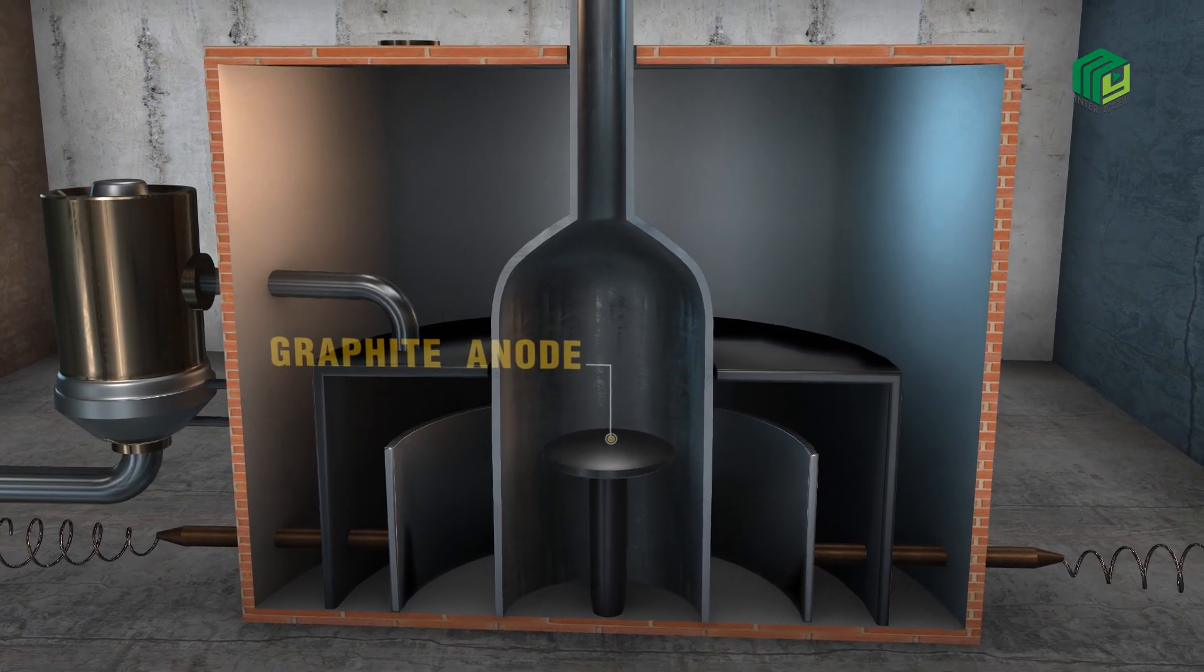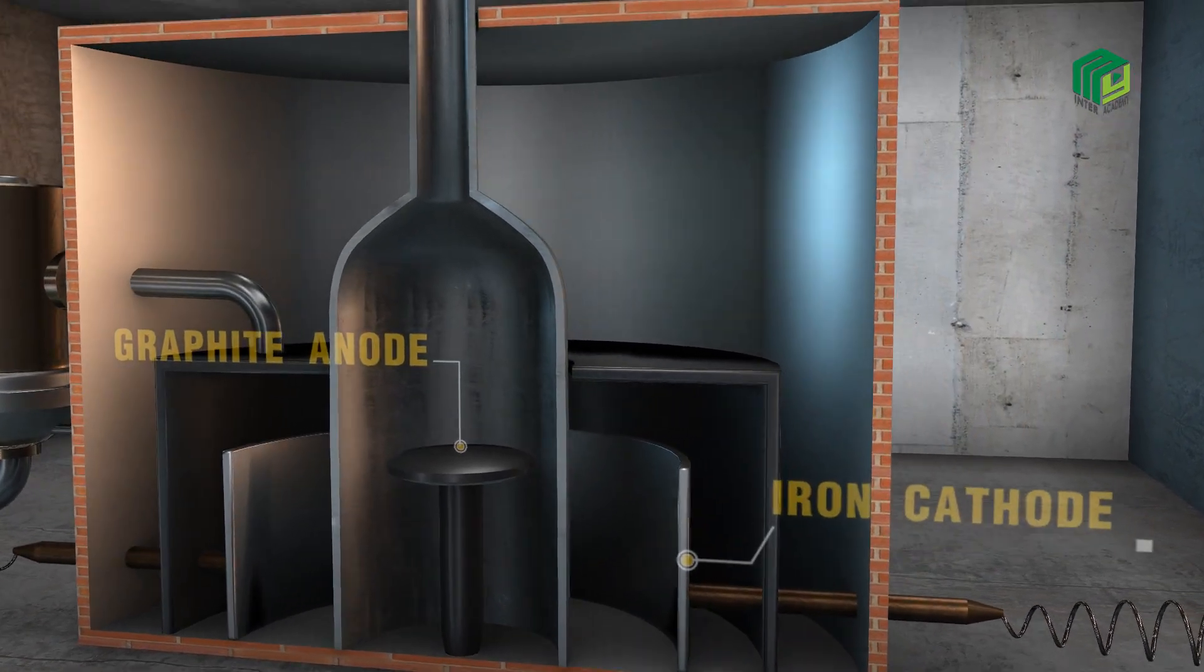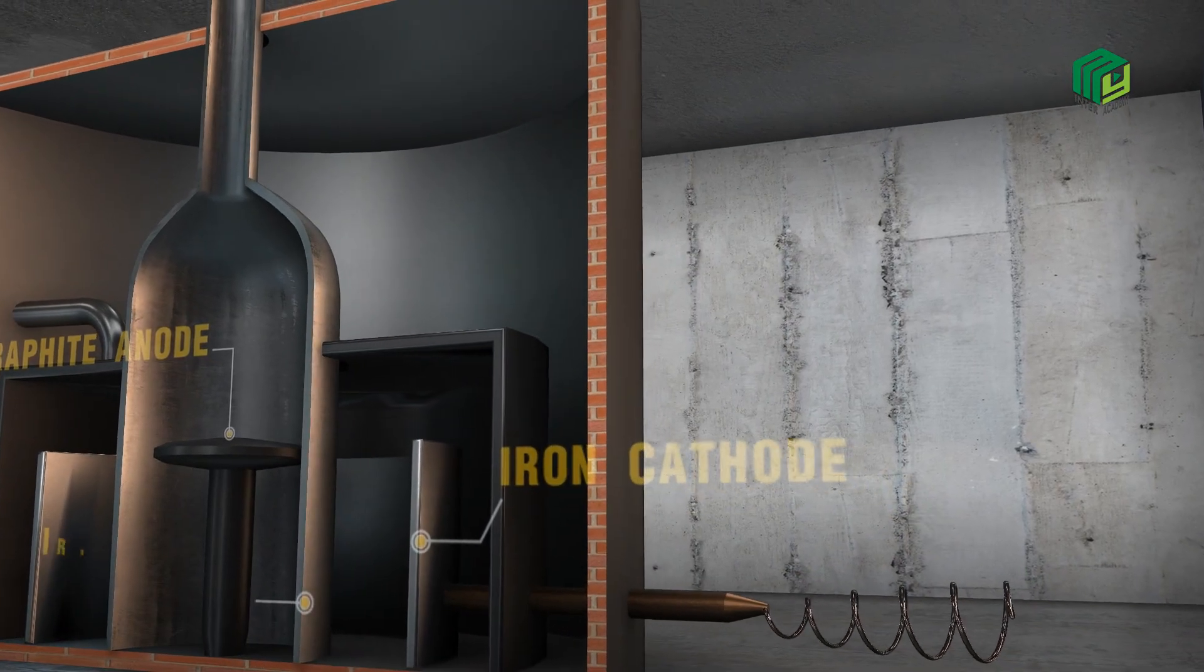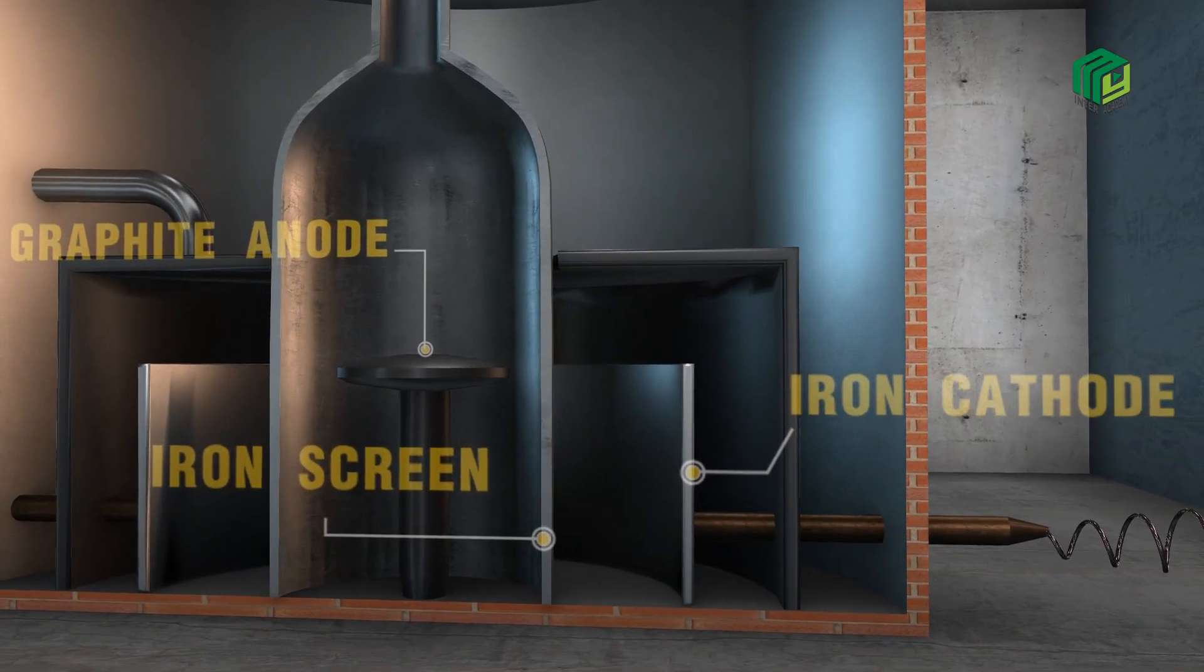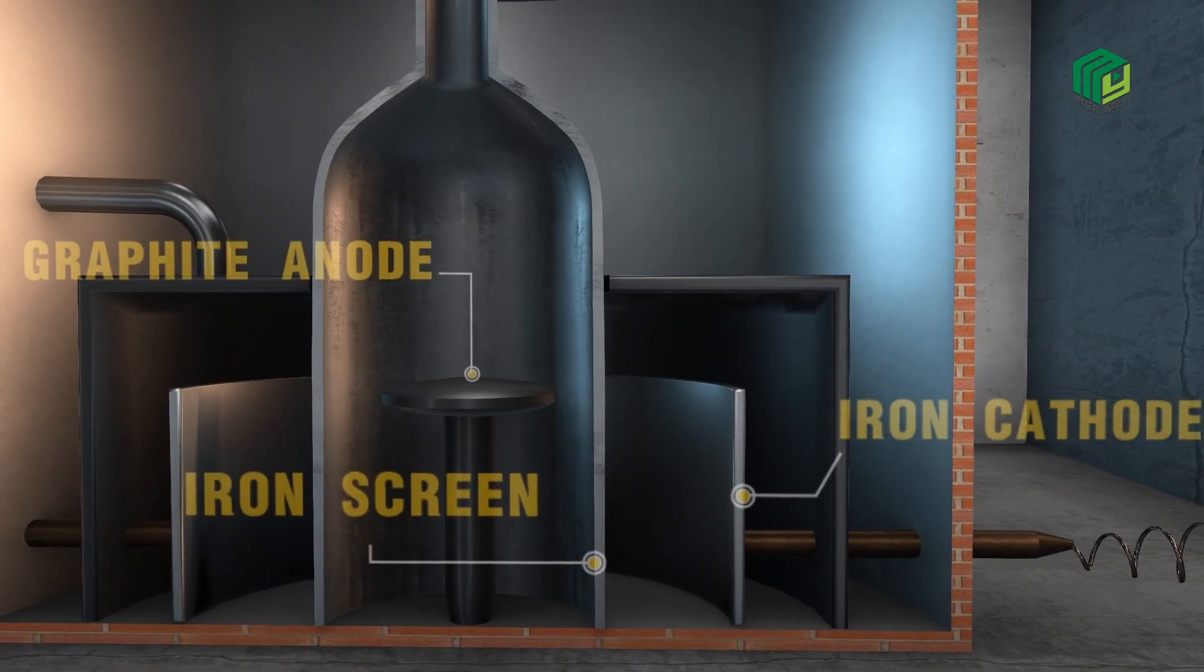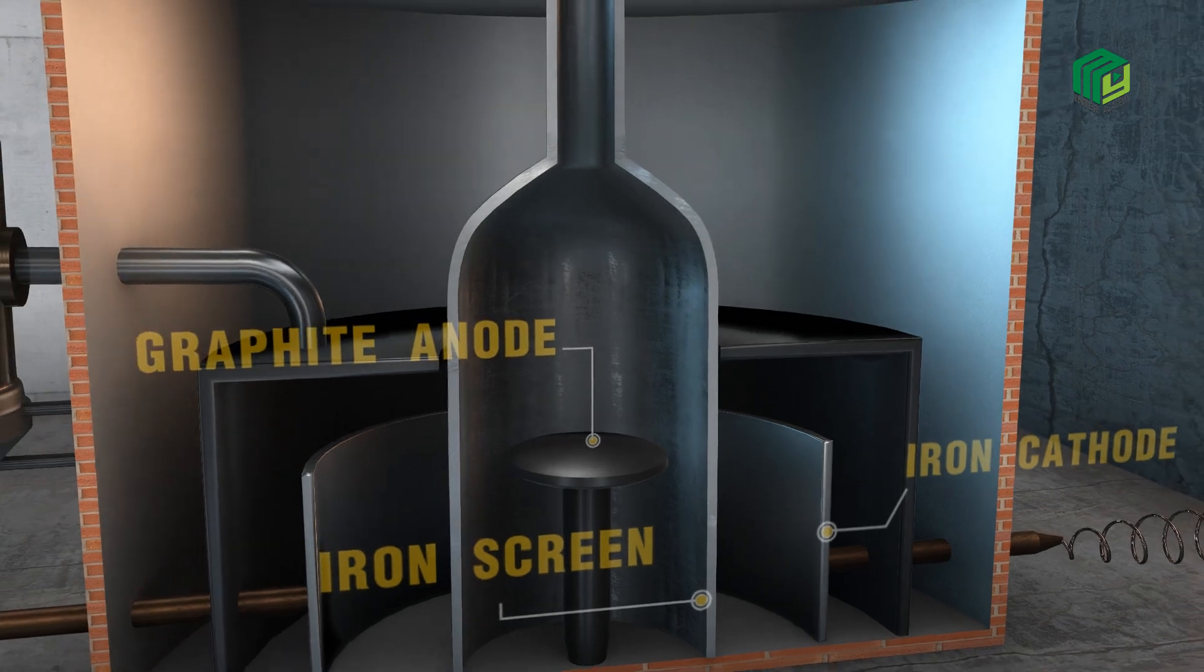A ring-shaped iron cathode is placed outside the anode. The cathode and anode are separated by an iron screen. This screen separates sodium and chlorine ions.